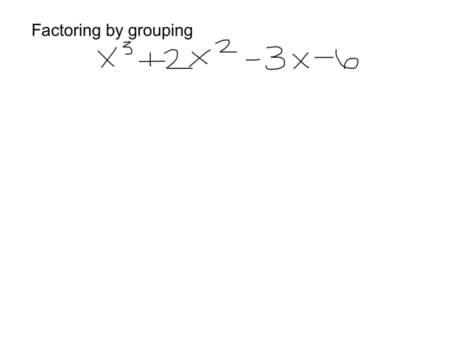Next we're going to look at factoring by grouping with 4 terms: x cubed, 2x squared, minus 3x, and minus 6. Whenever you are given 4 terms, draw the line down the middle, factor the left-hand side, then factor the right-hand side. What does x cubed and 2x squared have in common? Just x squared. When you factor out an x squared, it leaves you with x plus 2.